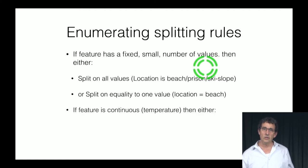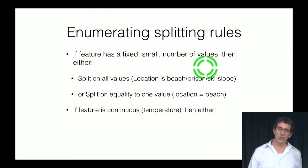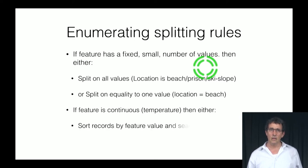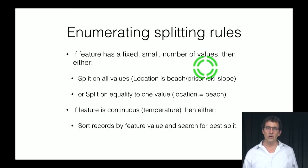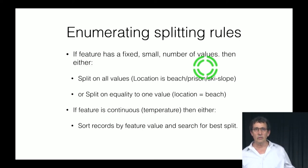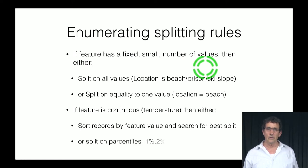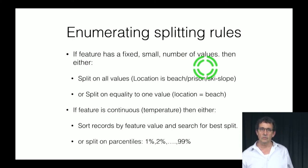If the feature is continuous, like temperature, then we have essentially two options. One is to take all of the records we have, all of the data, and sort it by the feature and then search for the best split along this line. Or we can split on percentiles.